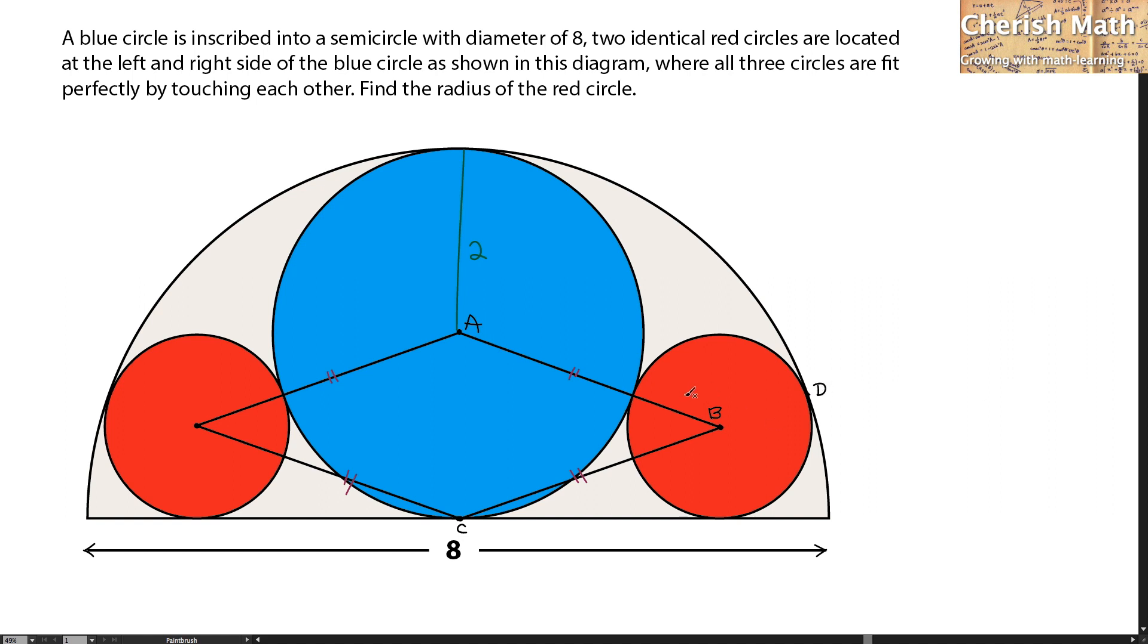Let me make R as the radius of the red circle. And since the blue circle has a radius of two units, that means the entire length of AB is 2 plus R. The line CB is extended to the point D, and this is how it looks like.